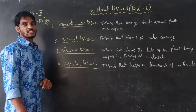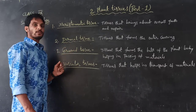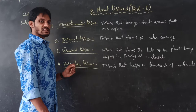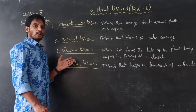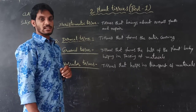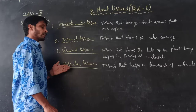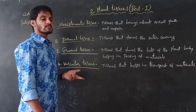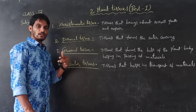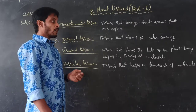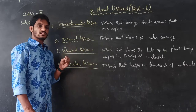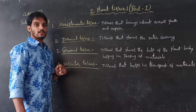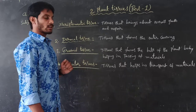Why is the cell called the basic unit of life? Because the life of every living organism starts with a single cell. That is why cell is called the basic structural unit of life. But the number of cells are not the same in all organisms — they differ from one organism to another. Based on the number of cells, organisms are mainly divided into two types: unicellular organisms and multicellular organisms.